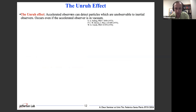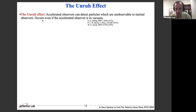After this short tour of light-front quantization, we are ready to discuss the Unruh effect. The Unruh effect is the statement that an accelerated observer can detect particles that are unobservable to an inertial observer, and this occurs even if the accelerated observer is in vacuum. So if you're in an ideal vacuum and you start accelerating a detector, that detector will start to detect particles.